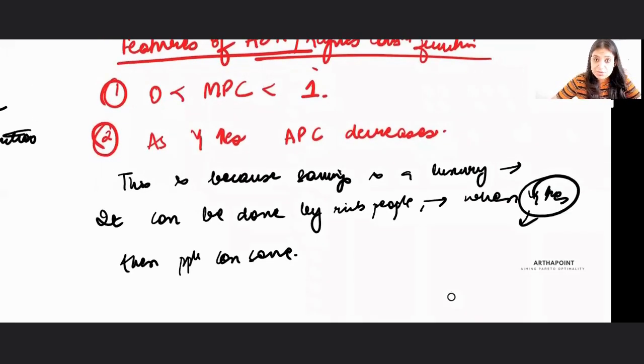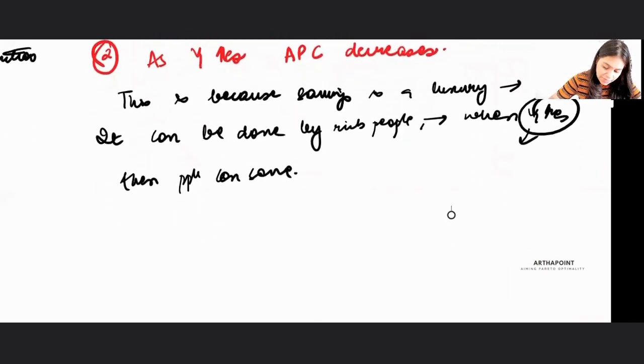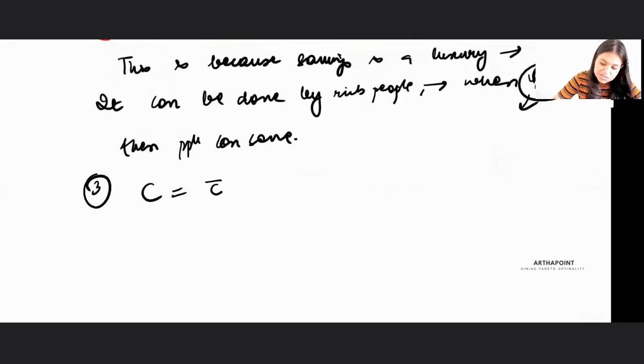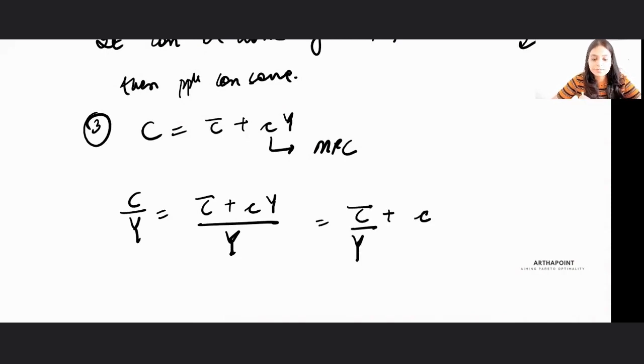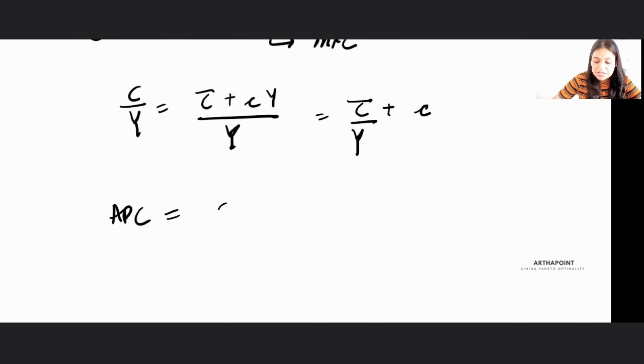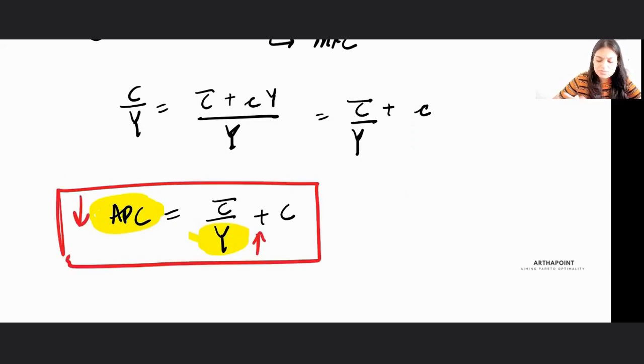So as income increases, my average propensity to consumption will decrease. My marginal propensity to consume will be between 0 and 1. Because my consumption function is C bar plus C times Y, this is MPC. But if you ask me what is APC, it's C by Y, which is C bar plus C times Y by Y. This is C bar by Y plus small c. So this is my APC. Do you clearly see an inverse relationship between APC and Y? As Y increases, APC decreases. A clear cut inverse relationship.